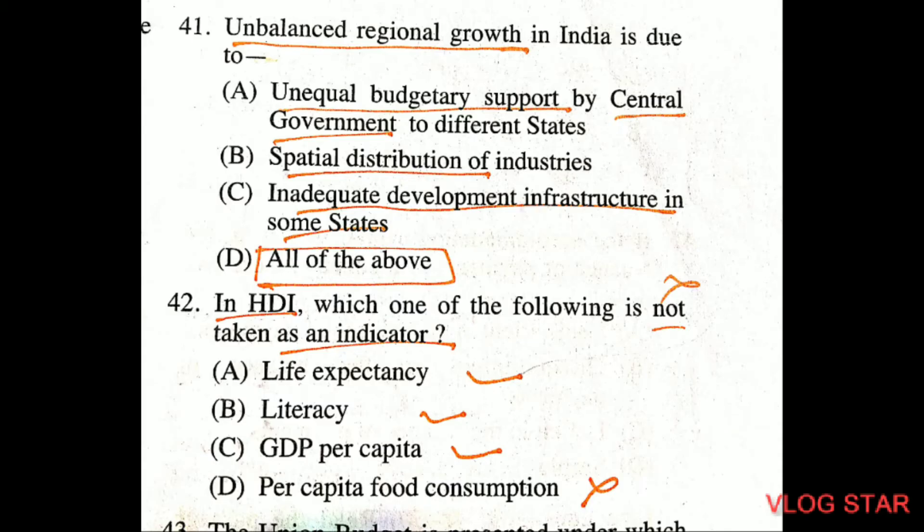Question number 41: unbalanced regional growth in India is due to all of these — unequal budgetary support by the central government to different states, unequal spatial distribution of industries, and inadequate development of infrastructure in some states.